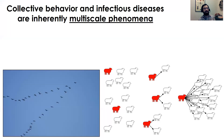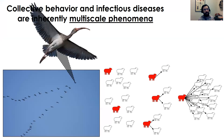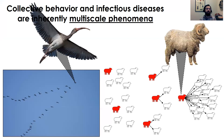One thing that unites collective behavior research and infectious disease research is that they're both inherently multiscale phenomena. For example, in the collective migration of bird flocks, the traits and experiences of individuals may predict their role in that group. And in disease outbreaks, host traits can influence infection risk and transmission potential, driving epidemiological dynamics at the population level. So individual traits influence collective outcomes, and group traits influence individual outcomes.